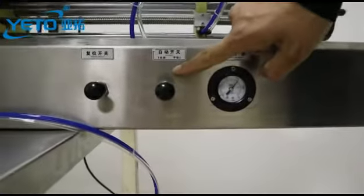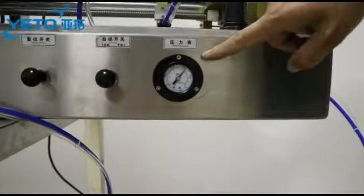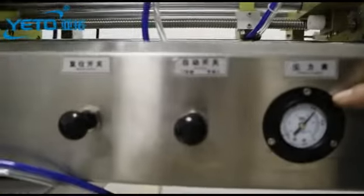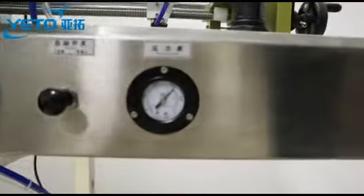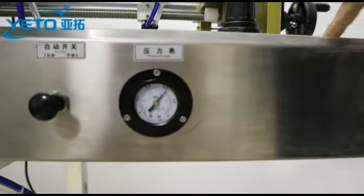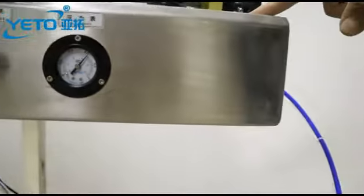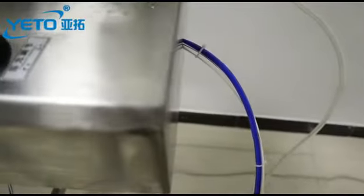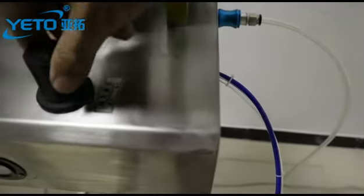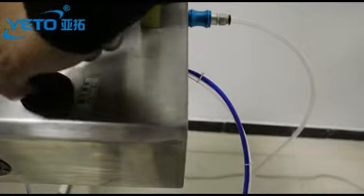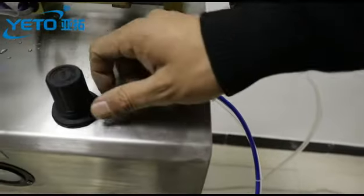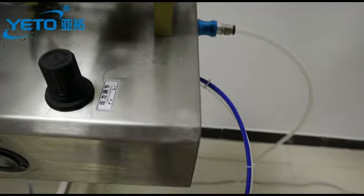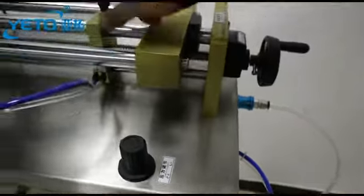The first one is the reset switch, and the second is the automatic switch. This one is for the pressure. To change the pressure of the machine, you should push it out and screw it to adjust. When finished, just press it down.